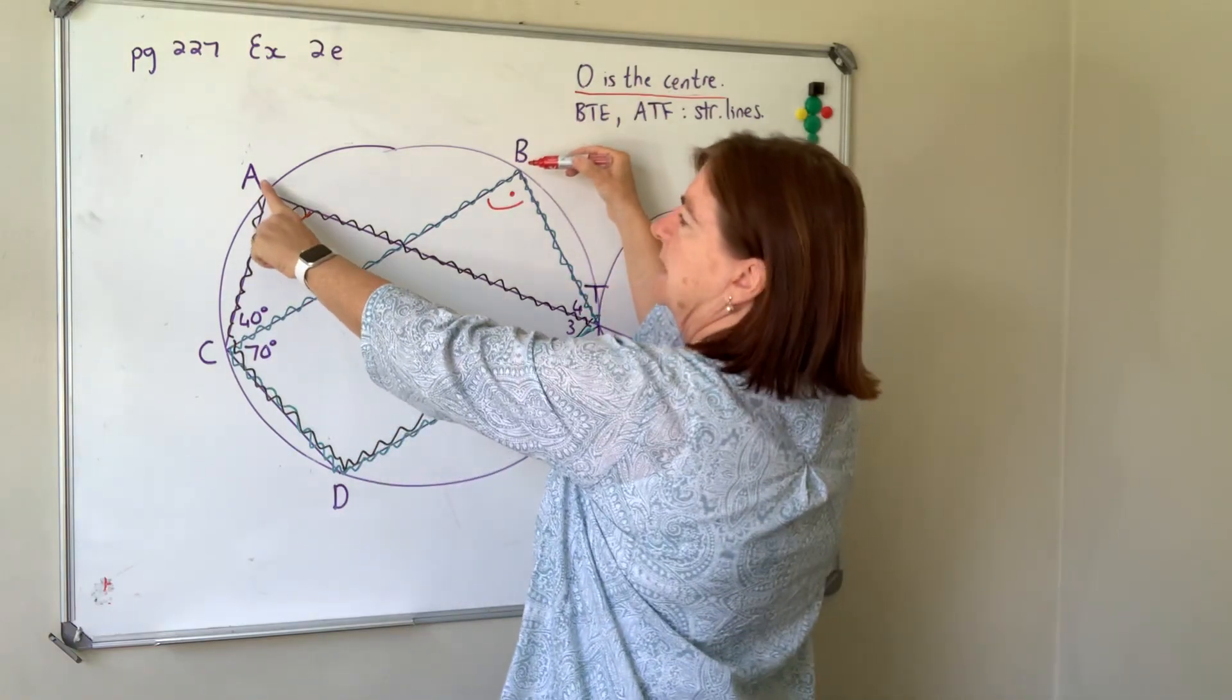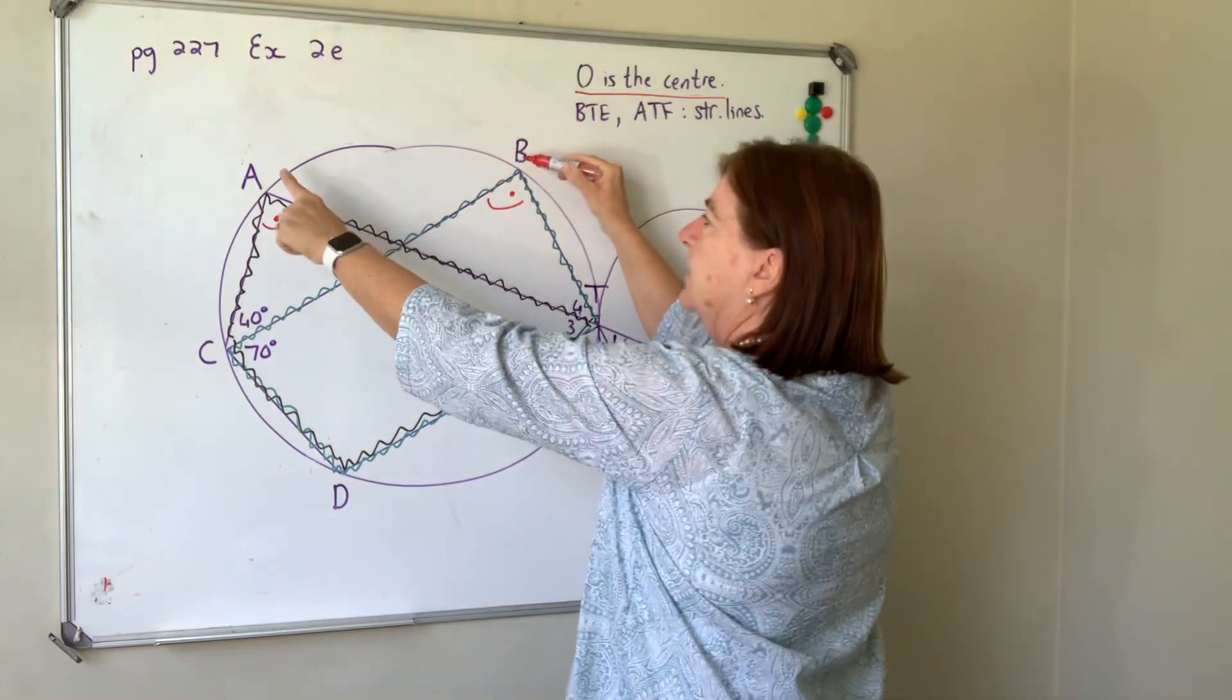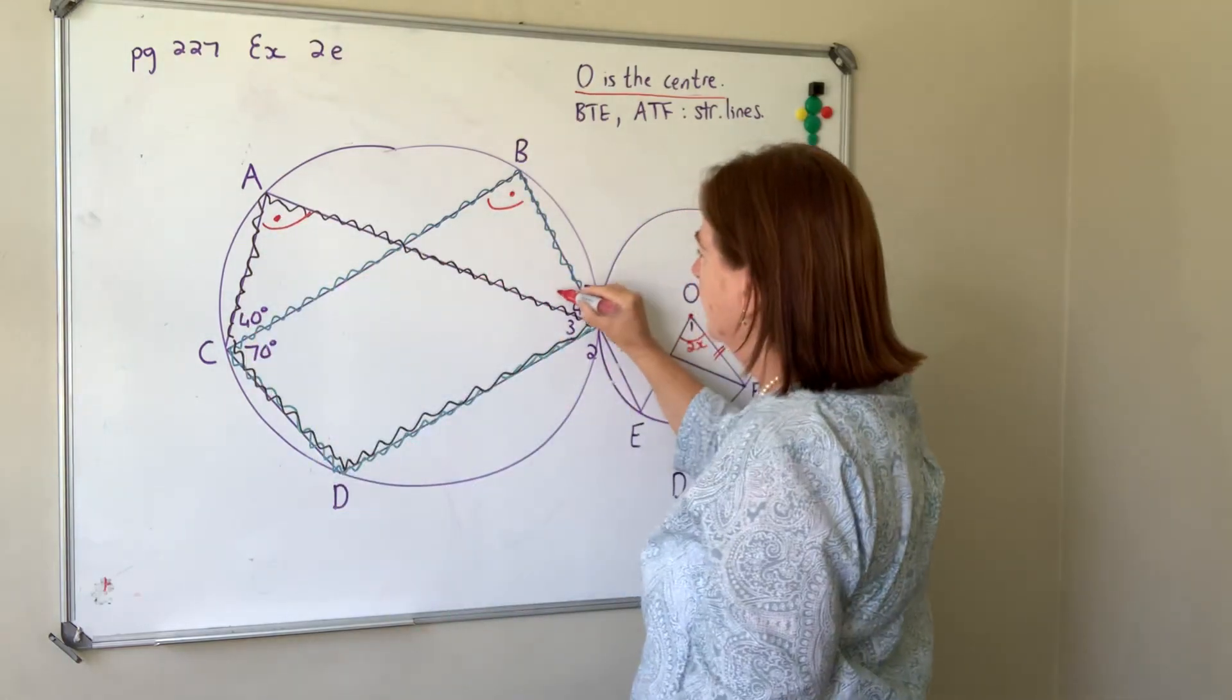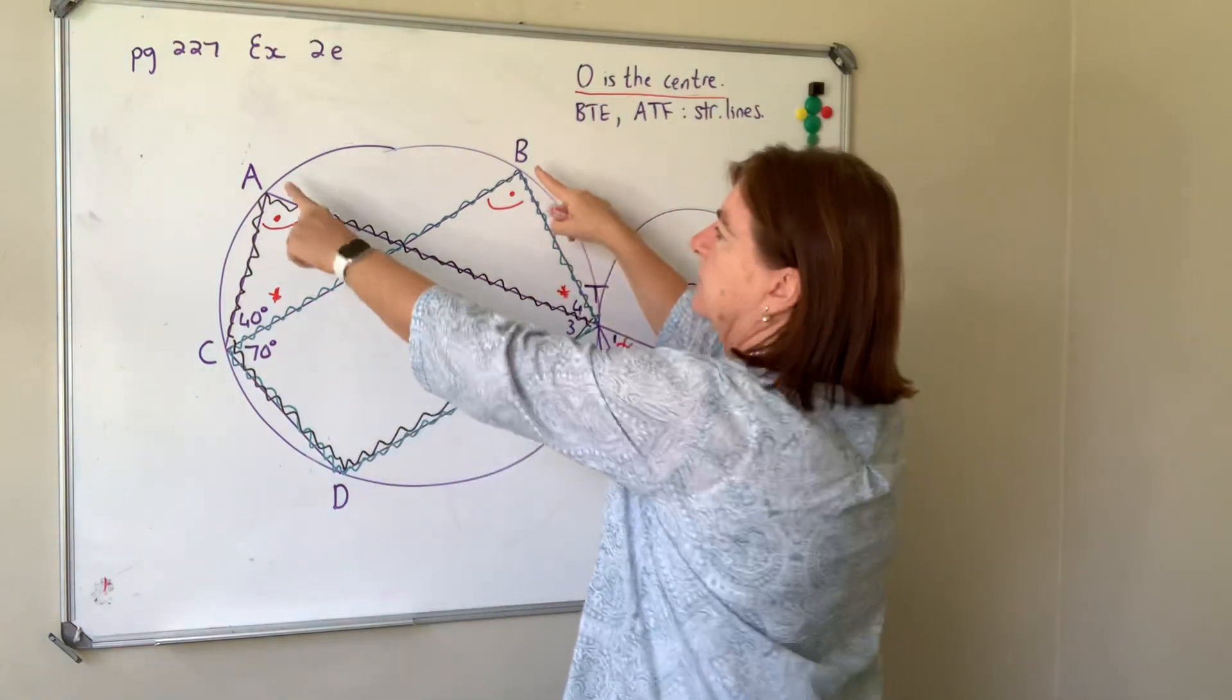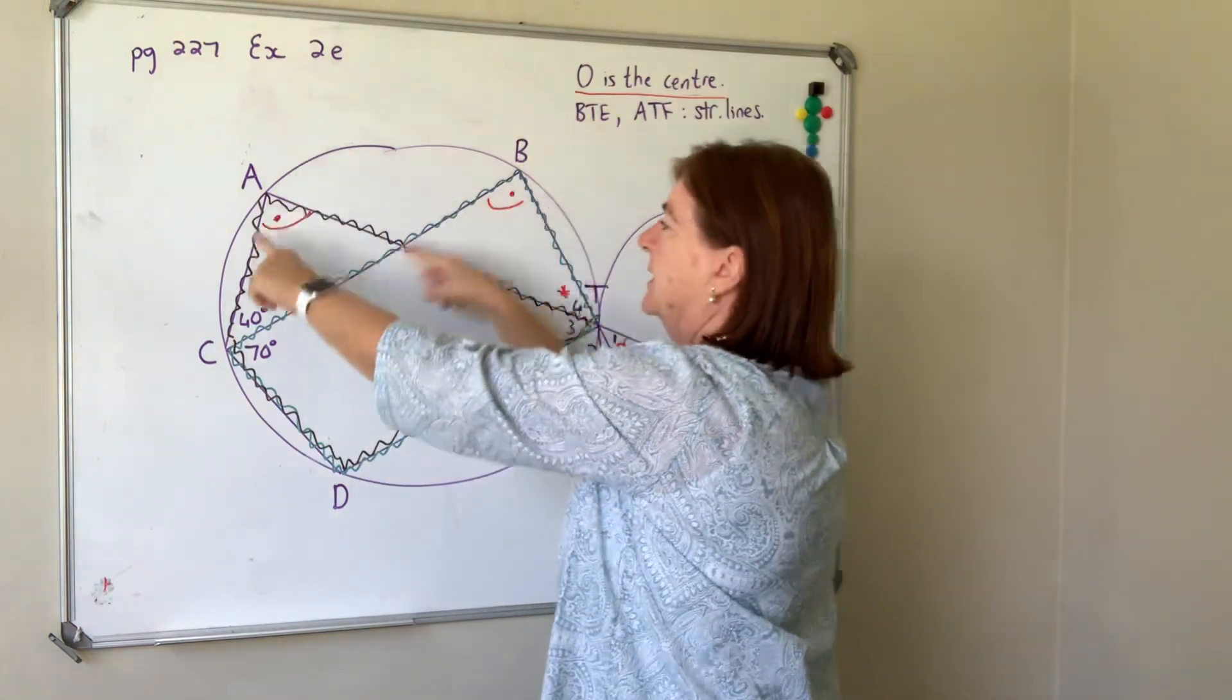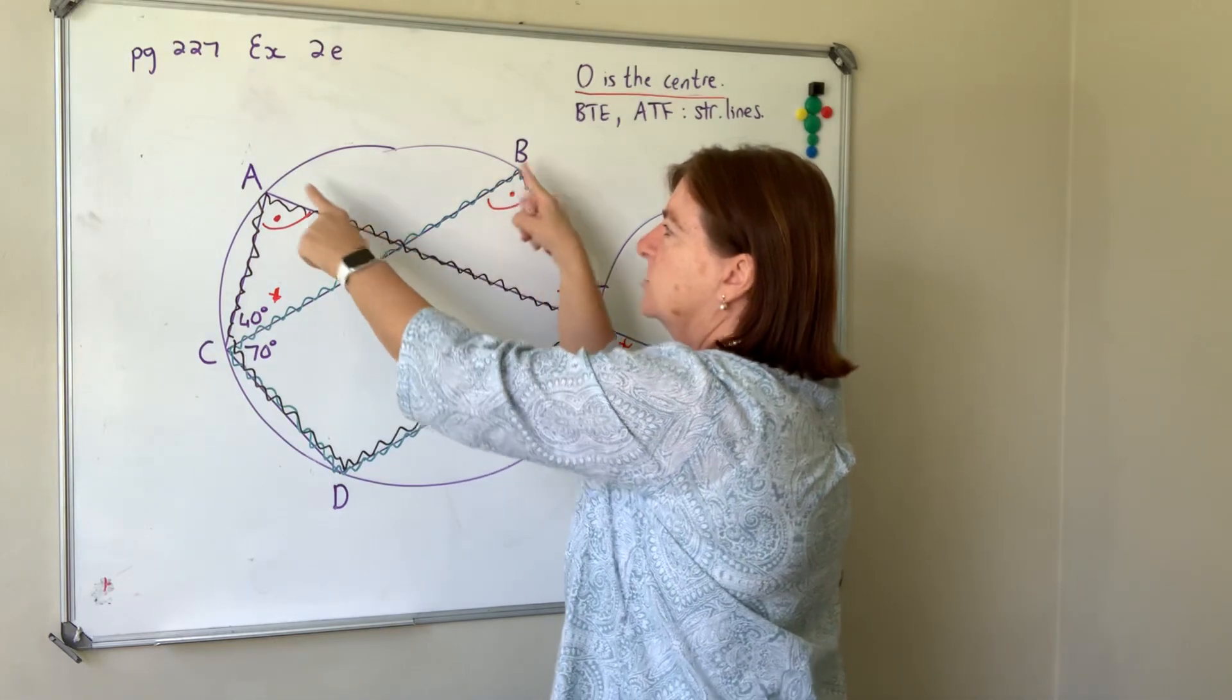Similarly, if we look at the angles coming from AB, subtended from AB, we go down here, up, and we go down there. So that would indicate that those two angles there are also going to be equal. That's not on the circumference and it's not at the center, so there's no relationship between those angles.